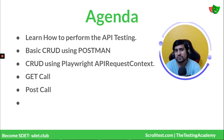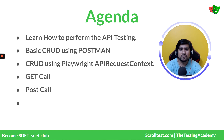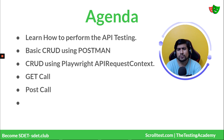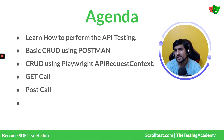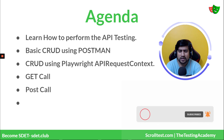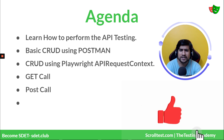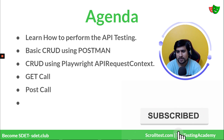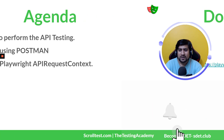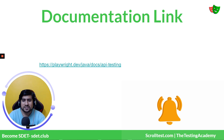We will basically see how you can perform API testing and what functions are already available in Playwright. We will see one CRUD operation in Postman first, and then automate that CRUD operation using Playwright's built-in function — the API Request Context. We will work on the GET, PUT, PATCH, and DELETE calls and try to automate all of them.